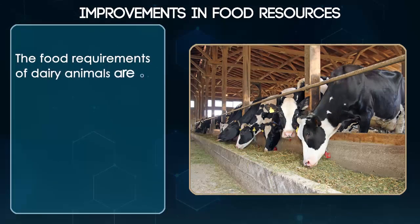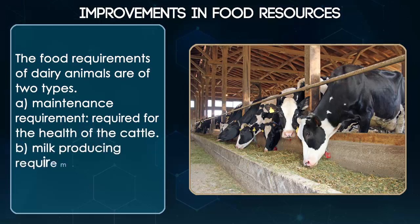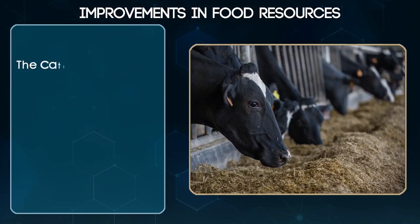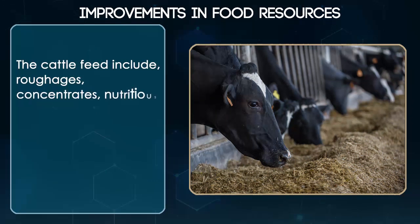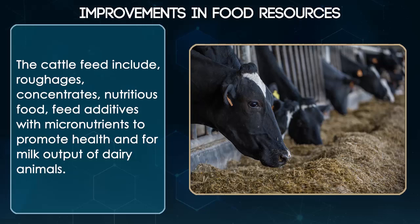The food required for dairy animals is of two types: A. Maintenance requirement — required for the health of the cattle, and B. Milk production requirement. The cattle feed includes roughages, concentrates, nutritious food and feed additives with micronutrients to promote health and milk output of dairy animals.